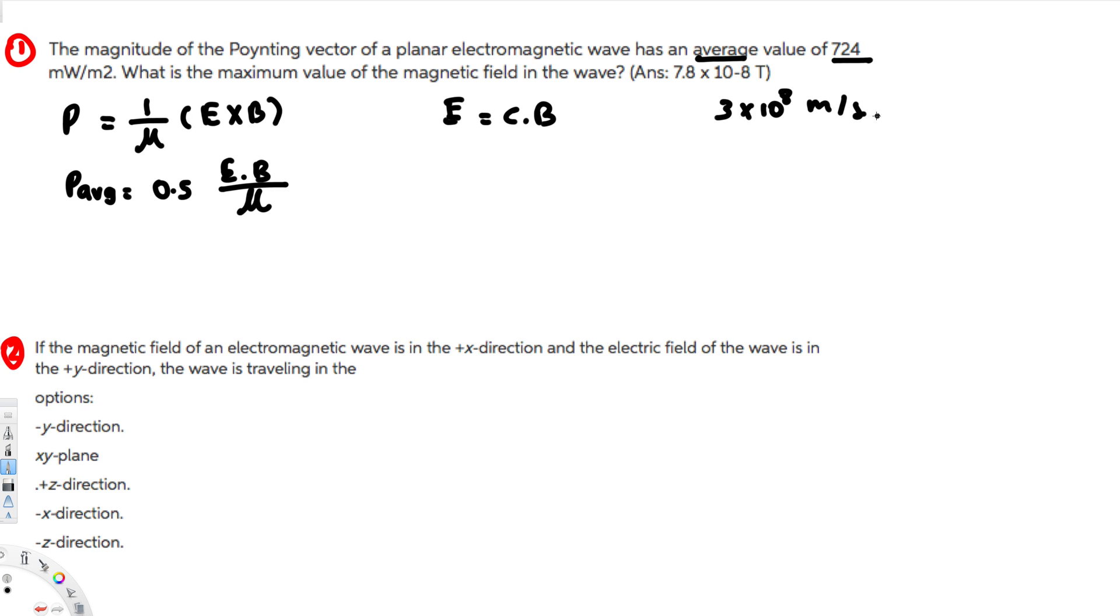So here we can apply that one. So if I plug this value, that's going to give us P average is equal to 0.5 CB, CB, so here we already have a B, so this is going to be CB squared over μ. Now since we are trying to find B, we can rearrange this equation.